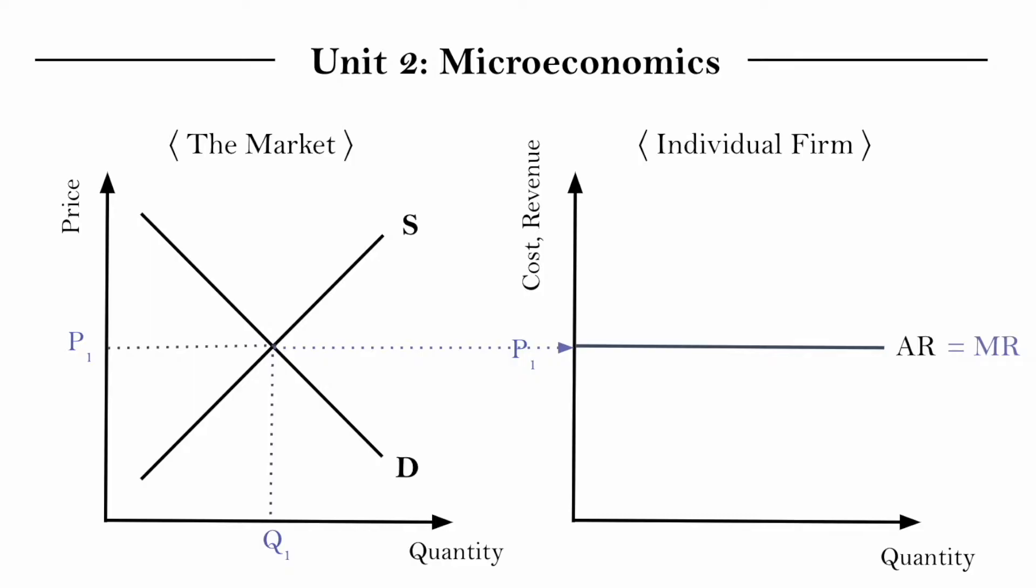So to do that, we're just going to pop in a generic marginal cost curve here, noted as MC, and then also our average cost curve. And the reason I mentioned it in that order is because a very important detail is that the MC curve should go through the minimum point of the ATC curve.